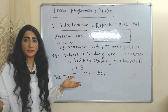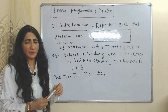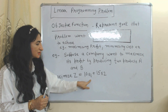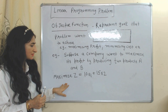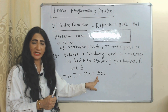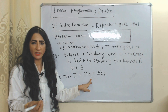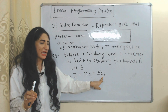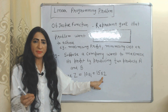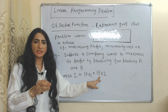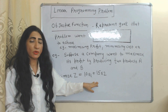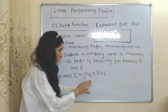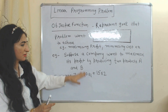The objective function of a Linear Programming problem represents a goal the problem wants to achieve. For example, a company wants to maximize its profit by producing two products A and B. The equation is: Maximize Z = 10X1 + 15X2, where X1 represents quantities of product A with 10 as per-unit profit, and X2 represents quantities of product B with 15 as per-unit profit. This total profit is what the company aims to maximize — that is why it is called the objective function.